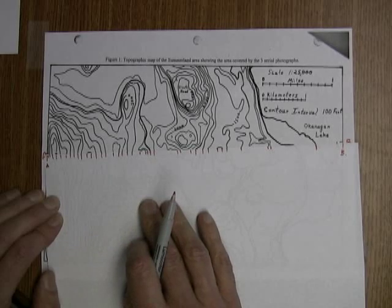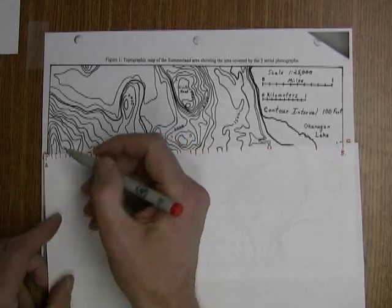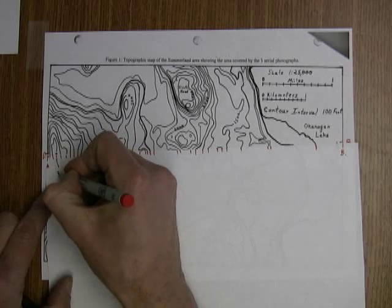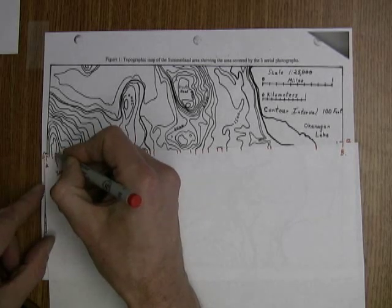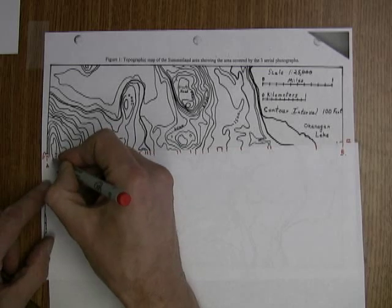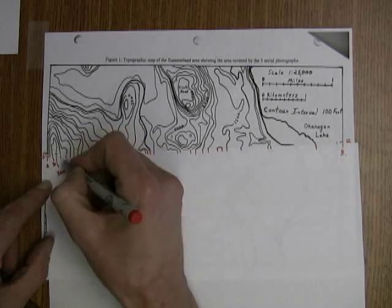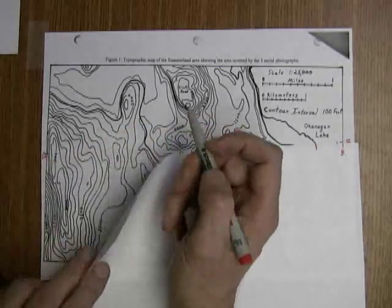What we need to do then is to mark on the values of the contour lines. Now not all of them are marked but we can certainly mark some of them. Here we have for example the 3,000. That's 3,000. That one loops around here so this one is also 3,000. So this one is going to be 3,000. We'll just put 3,000 here because all of these are in 100 foot intervals.